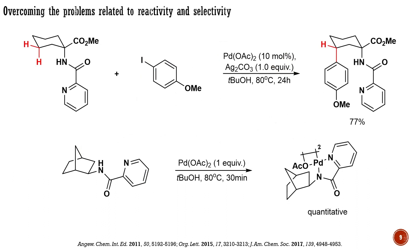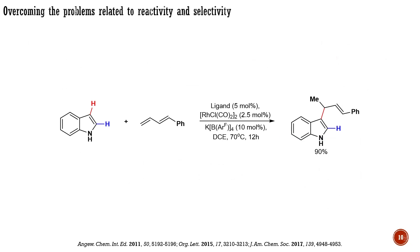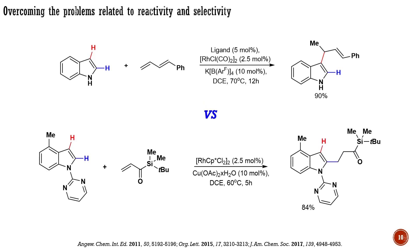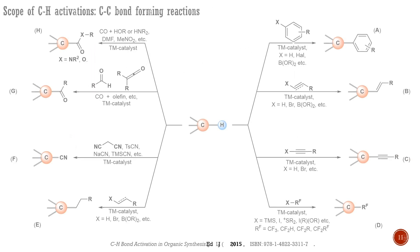Unfunctionalized alkanes are generally unreactive. However, the introduction of a directing group into paraffins can dramatically alter known reactivity patterns. Consider this example published in 2011: the palladium-catalyzed arylation of cyclohexane possessing a pyridine-based directing group leads to arylated cyclohexane in good yield and excellent regioselectivity. Under these conditions, unfunctionalized cyclohexane is not reactive. The authors also demonstrated the role of the directing group by isolating a palladacycle where the catalyst is coordinated by the directing group. In another example, rhodium-catalyzed alkylation of unfunctionalized indoles occurs at position 3, but the introduction of a directing group alters the selectivity to position 2, showing that directing effects are more dominant than the inherent reactivity of the system.